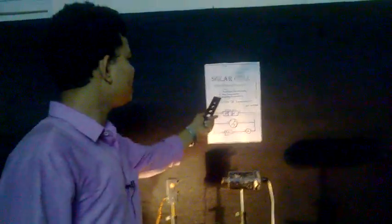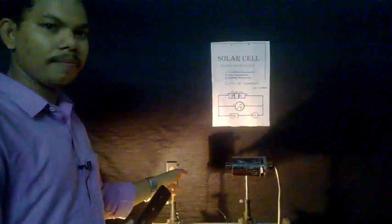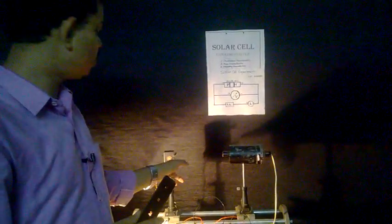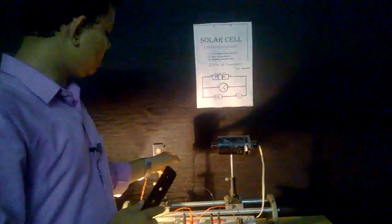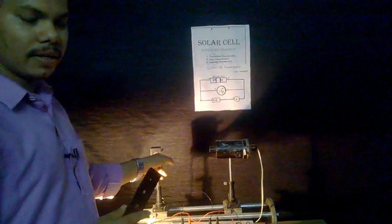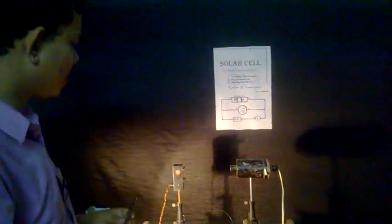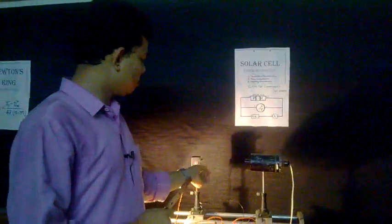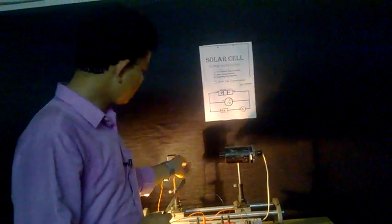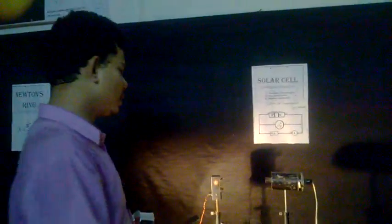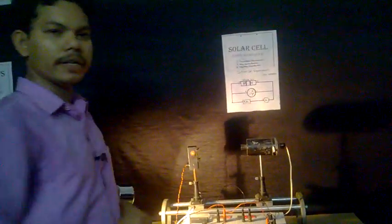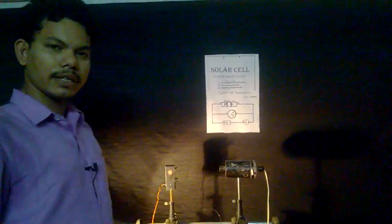The second aim is the area characteristic. If we change the area of falling light — meaning if we change the area using an obstacle — we have to measure the corresponding voltage and current.